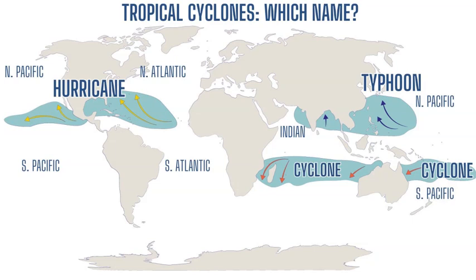Once the persistent wind speeds reach 74 miles per hour, the low pressure storm officially becomes a tropical cyclone. This is a general term for any low pressure rotating storm that forms over equatorial regions and warm water, and is going to move according to the Coriolis Effect, the wind direction, and also the ocean currents and where the high pressure ridges are directing these low pressure systems.